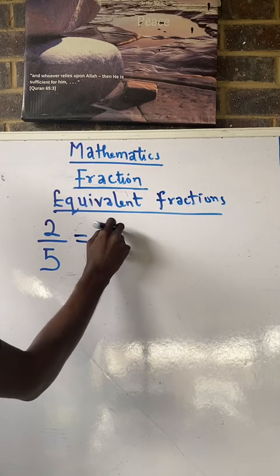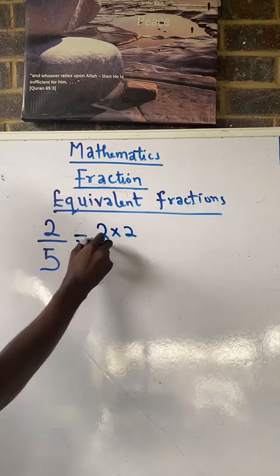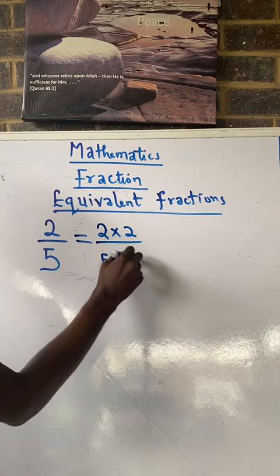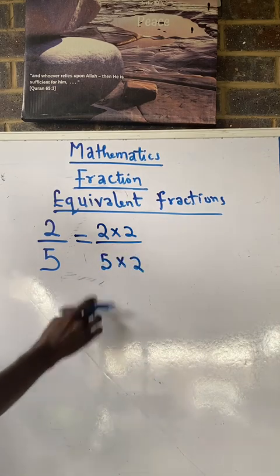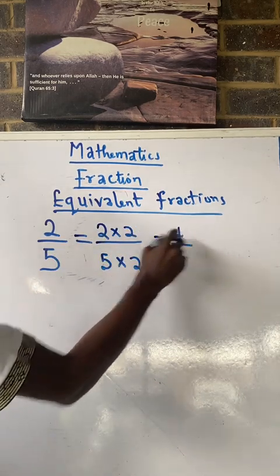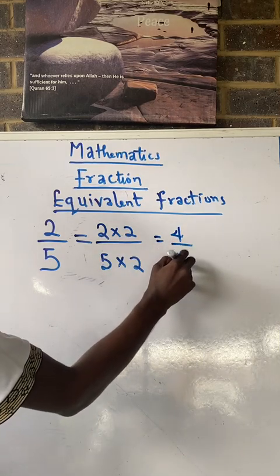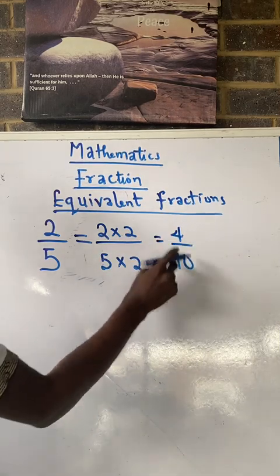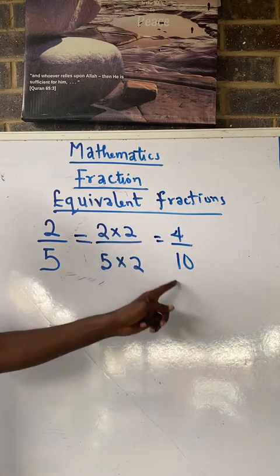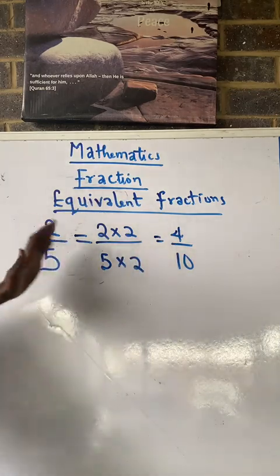Two times two gives us four, and five times two gives me ten. So four over ten is also an equivalent fraction to two over five.